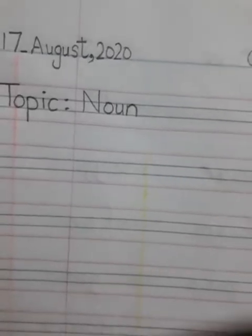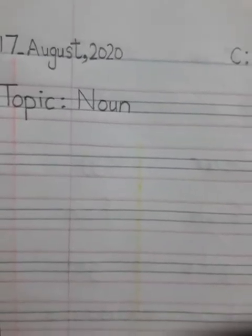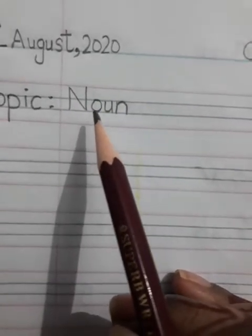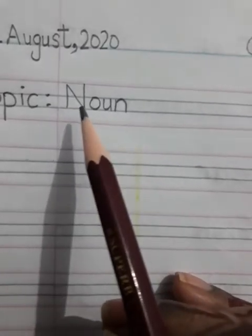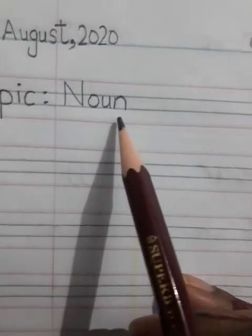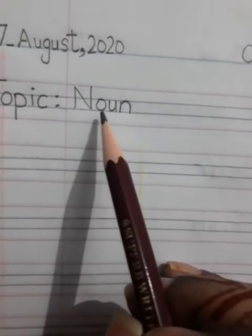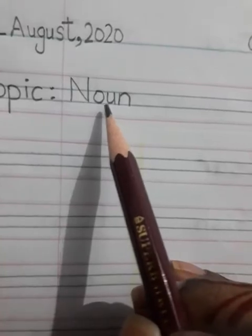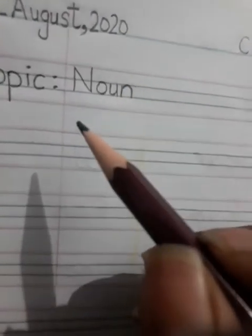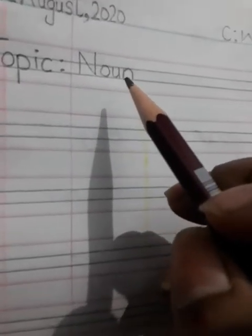Today we have a new topic. Let's do the phonics first: N-O-U-N, Noun. What is a noun? A noun is everything which has a name. The name of anything is known as a noun.